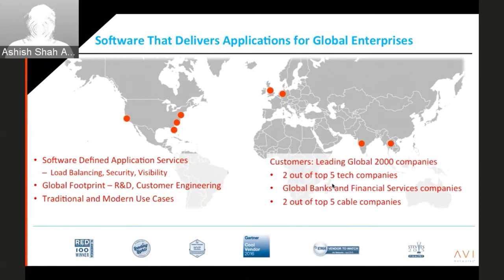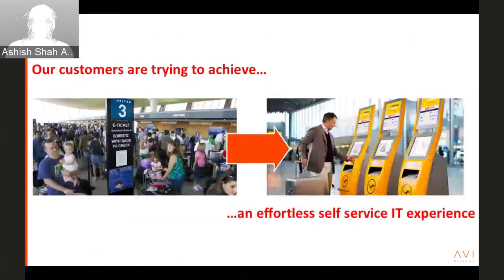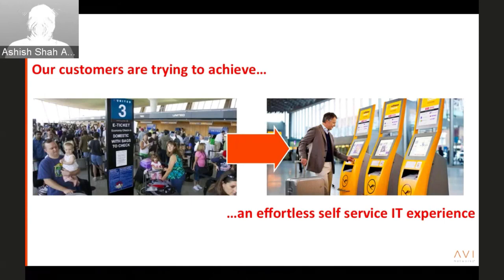What our customers are trying to achieve across all use cases — on-prem, private cloud, public cloud, or containers — is going from a manual, ticket-driven operation to a self-service, fully automated experience with CI/CD, network automation, application automation deployment, OpenShift, Ansible, and so on. The use cases might be different, but the underlying driving factor for these customers is automation. And that's why automation is built-in fundamentally into Avi's solution.